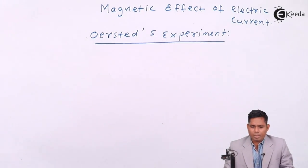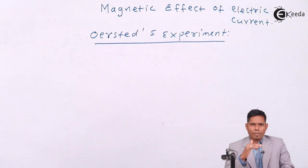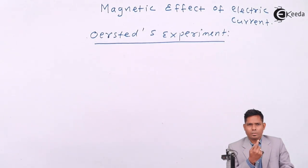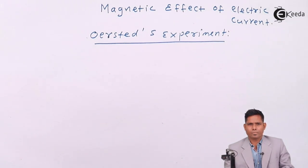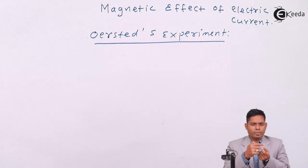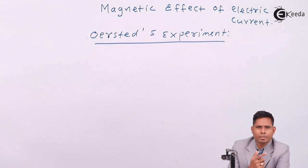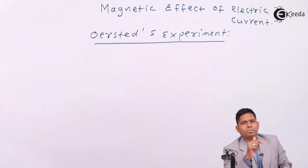The experiment is very simple. Current is flowing through a wire, and below the wire we keep a magnetic needle. This magnetic needle can rotate in the vertical axis in the horizontal plane. This is a conductor through which current is flowing, and below it we have a magnetic needle with north and south poles. The magnetic needle always points north-south. When current starts flowing and the needle is lying below, it gets deflected.